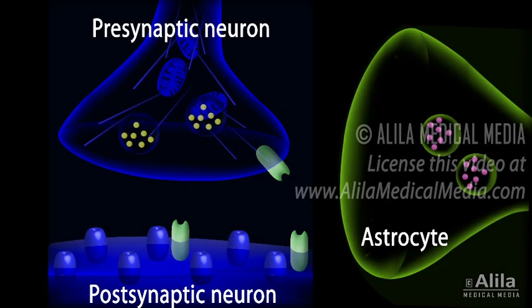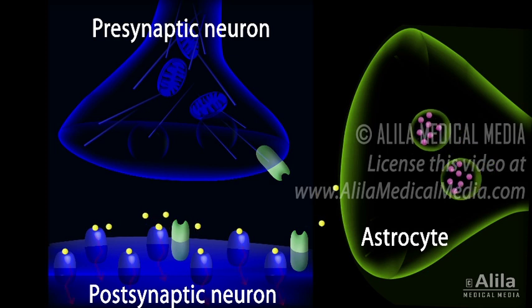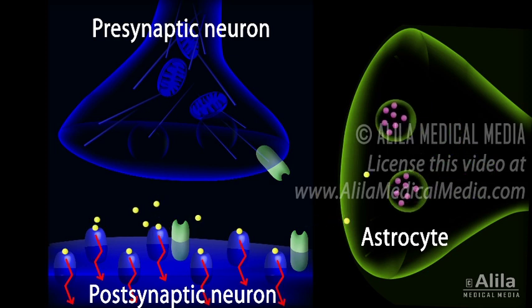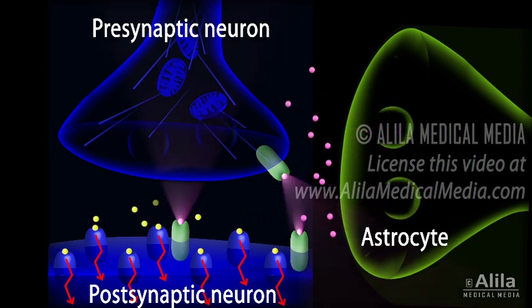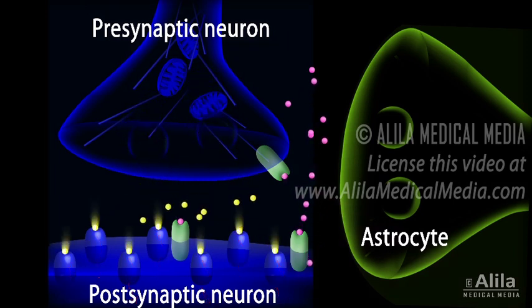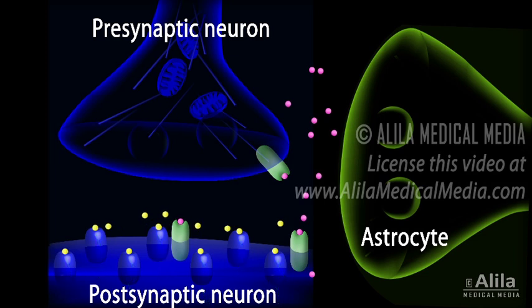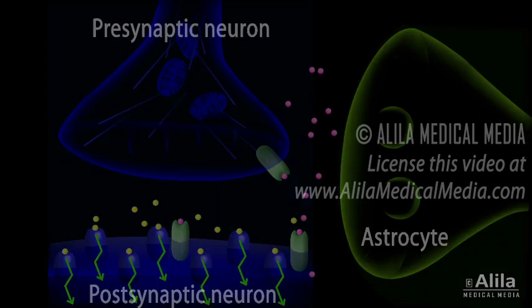Recently, it has been shown that astrocytes can also communicate electrically with neurons and modify the signals they send and receive. In a manner similar to neurons, astrocytes can release transmitters, called gliotransmitters, upon stimulation. This suggests that astrocytes may be involved directly in the communication functions of the brain.